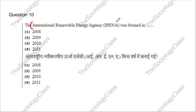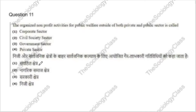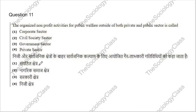Question 10: The International Renewable Energy Agency was formed in which year? Options: 2008, 2009, 2010, or 2011. This is a very factual question. The correct answer is option 2 — 2009.